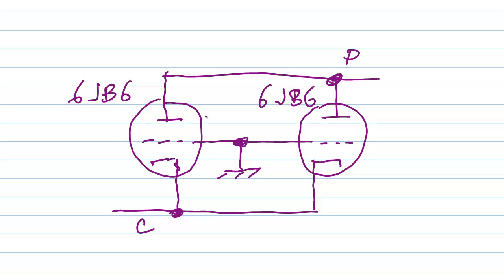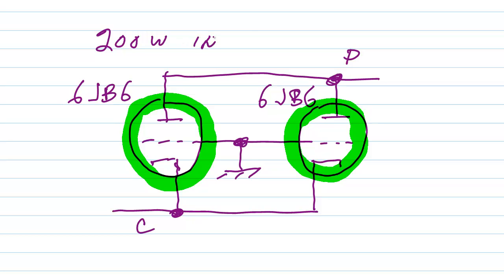So what we had here was two vacuum tubes, 6JB6 connected in parallel, which provided a total DC plate power input of 200 watts. That's the DC plate power input. Back in those days, they used to specify the power limits for ham radio transmitters in terms of the plate power input.